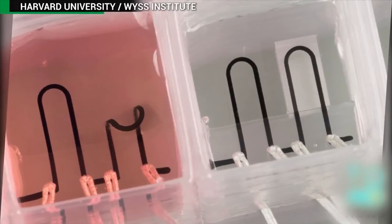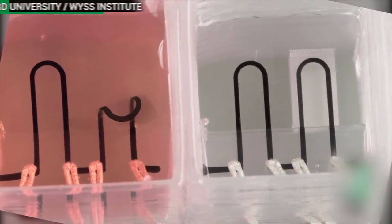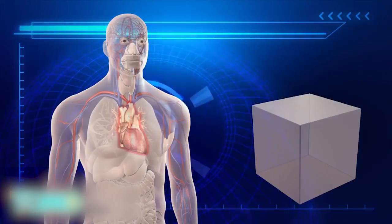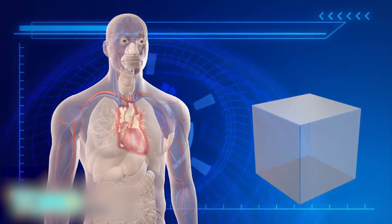3D printed organ-on-a-chip could end animal testing. Harvard scientists have developed a 3D printed heart on a computer chip which can be used to study heart conditions without testing medical treatments on animals. The heart-on-a-chip is composed of a small piece of flexible polymer that contains living human heart cells, which can mimic the physiological response of a human heart.